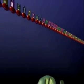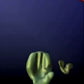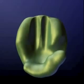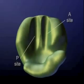The polypeptide can be assembled once RNA binds to a ribosome. Ribosomes consist of large and small subunits. The large subunit has two binding sites for transfer RNA: the P and A sites.